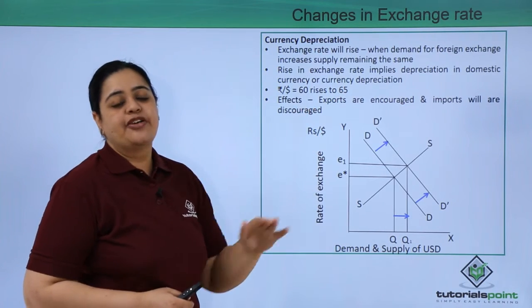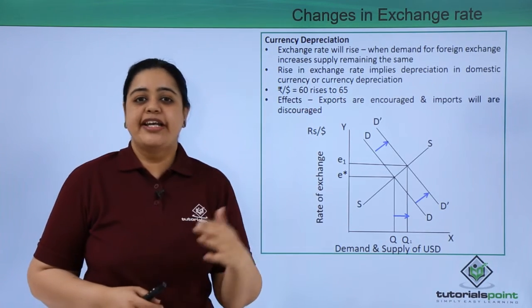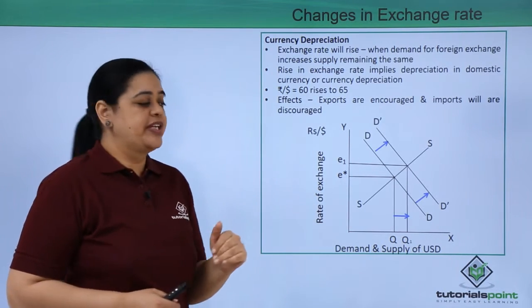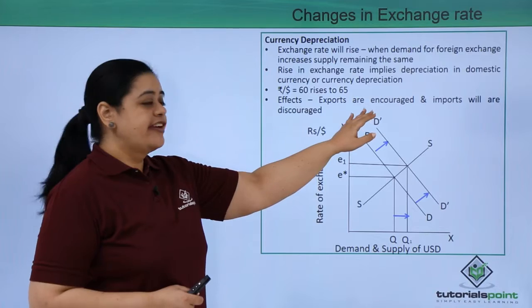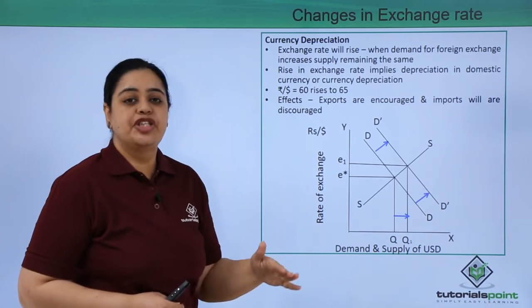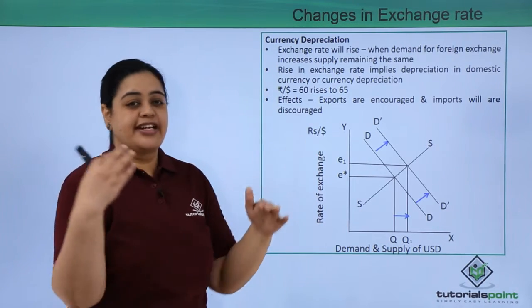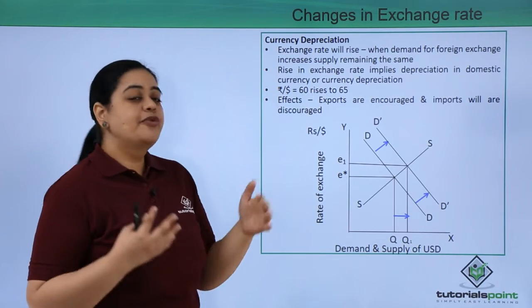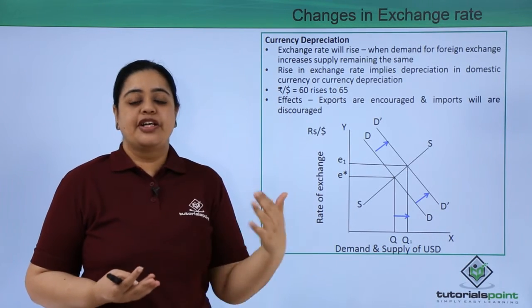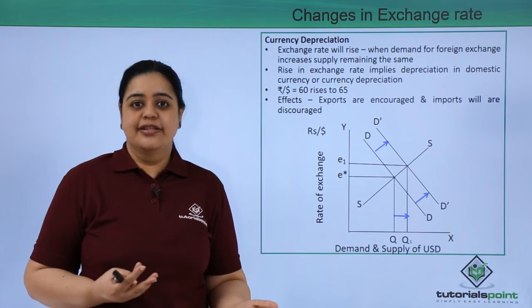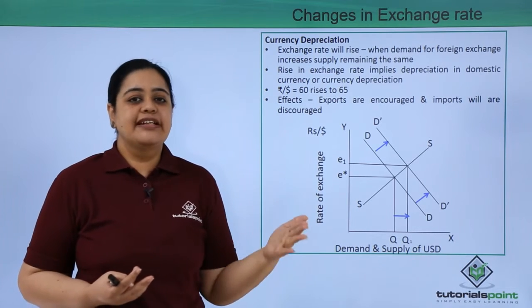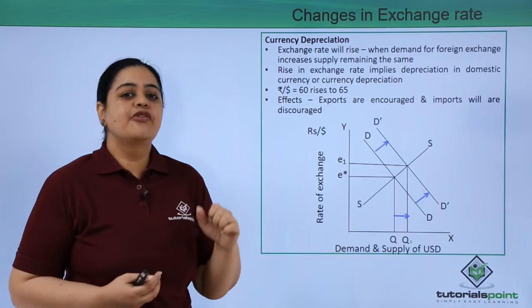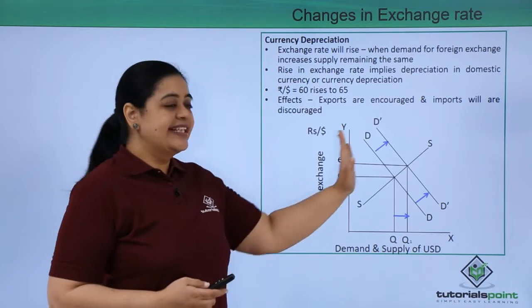What happens in this scenario? Suppose one dollar was commanding 60 rupees, now it will command 65 rupees. So, what are the effects? The exports become cheaper, so exports are encouraged by this kind of depreciation. Imports become dearer. Why? Because now you have to pay more rupees, so that would result in discouragement of imports because imports are now costlier.